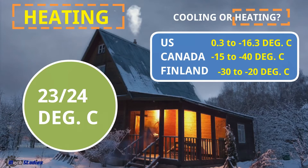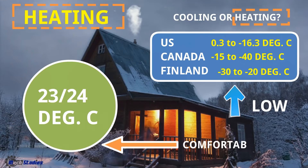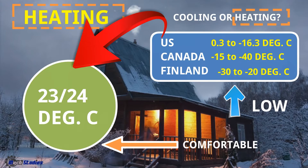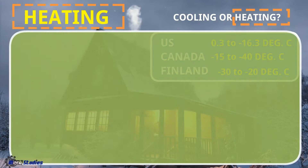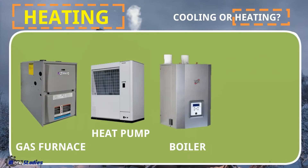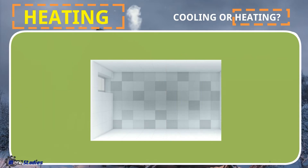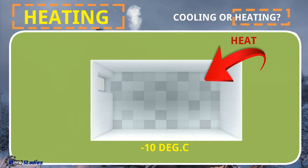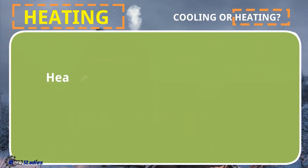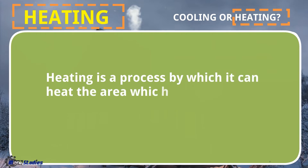Human beings are comfortable with 23 to 24 degrees centigrade. So the temperatures in the US, Canada, and Finland are very low, and we have to make the temperature around 23-24 degrees. There are many devices or equipment available for heating, like gas furnace, heat pump, boiler, space heaters, and electric heaters. For example, if a room has minus 10 degrees centigrade, we have to add heat to bring it to 23 or 24 degrees. Heating is a process by which it can heat the area which is to be conditioned.